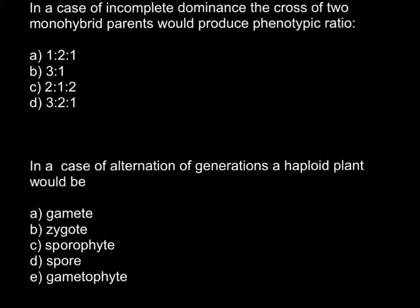So here is the first question. In the case of incomplete dominance, the cross of two monohybrid parents would produce phenotypic ratio, and here are four answers that you may choose from.